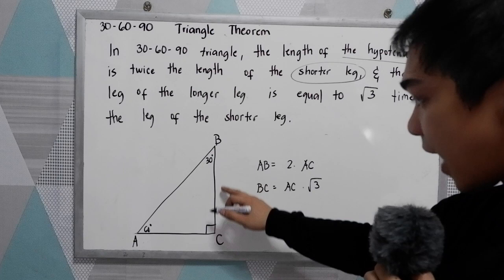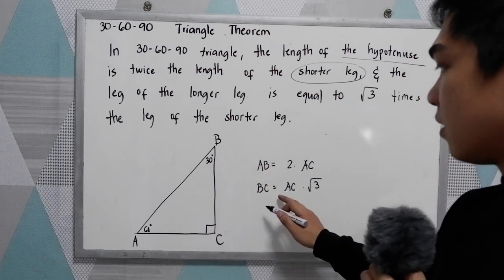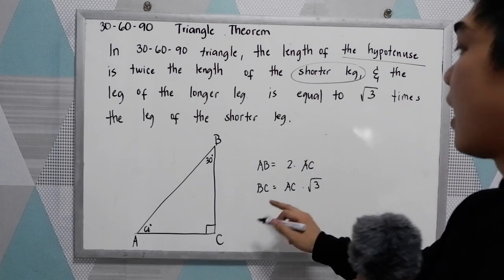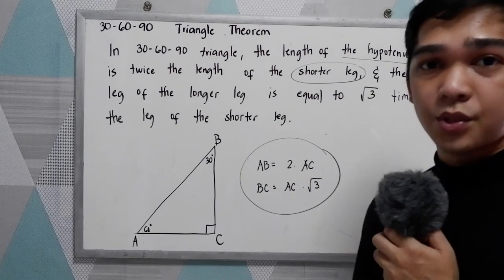And the longer leg BC is equal to the square root of 3 times the length of the shorter leg. So this is the formula that you're going to use.